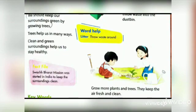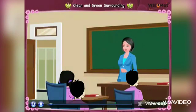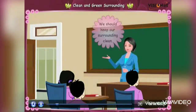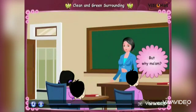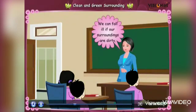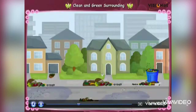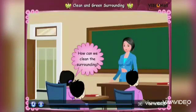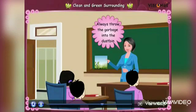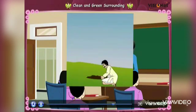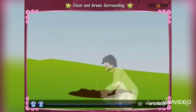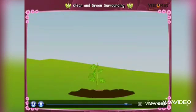We should keep our surroundings clean. But why? Because we can fall ill if our surroundings are dirty. To keep them clean, always throw garbage into the dustbin and maintain cleanliness. We should also keep our surroundings green by growing trees, as trees help us in many ways.